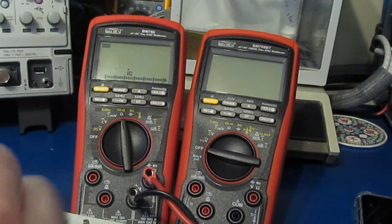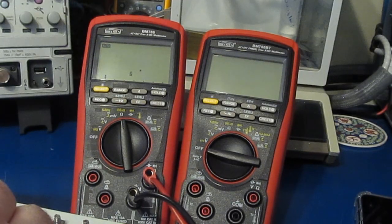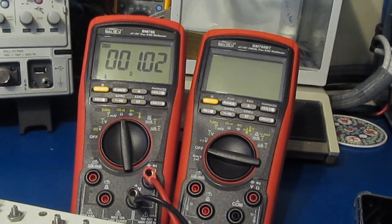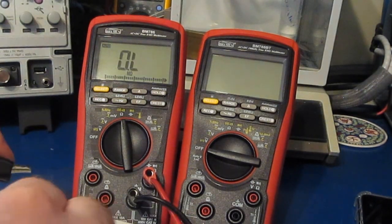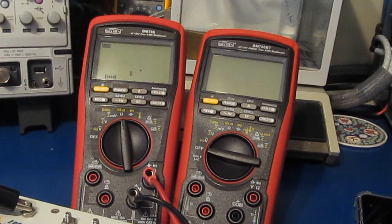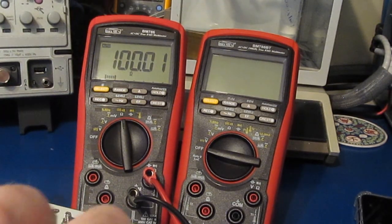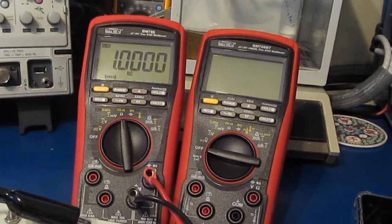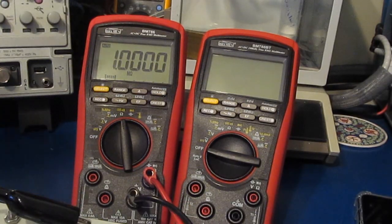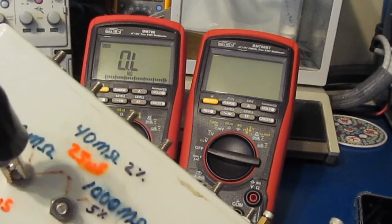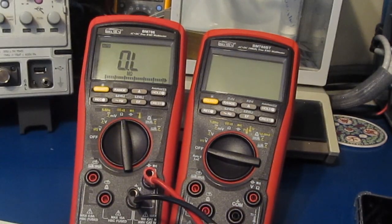So here we are with a one ohm resistor and you can see it measures 1.02. Here we are with our 100 ohm resistor and it's measuring 100.0201. This is our 1 meg. Again, this is a one percent part.